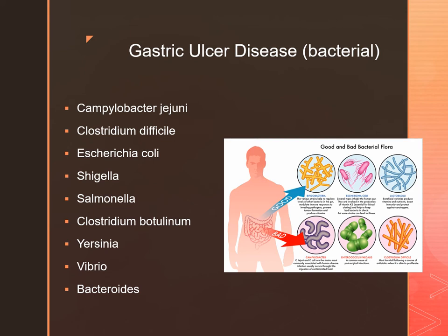Salmonella infections are the most common cause of enterocolitis. Salmonella lives in the intestines of humans and other animals, and cases are typically mild or undiagnosed. Statistics show about 42,000 cases in the U.S. annually, though the actual number is believed to be higher since many cases go undiagnosed. Botulism is caused by Clostridium botulinum, found in soil and improperly canned foods.